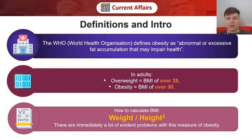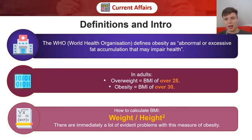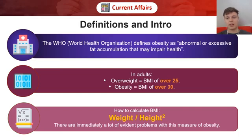Let's kick off with a definition. The WHO defines obesity as the abnormal or excessive fat accumulation that may impair health. This is quite a vague definition — at what point does obesity become not abnormal accumulation of fat? With an increasing proportion of our population becoming overweight and obese, at what point does this become normal? Perhaps a different measure is the BMI. Being overweight is classed as a BMI of over 25, whereas obesity is a BMI of over 30. You can calculate your BMI by taking your weight and dividing it by the square of your height.